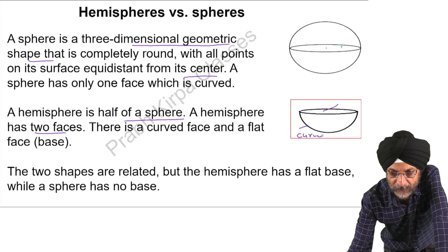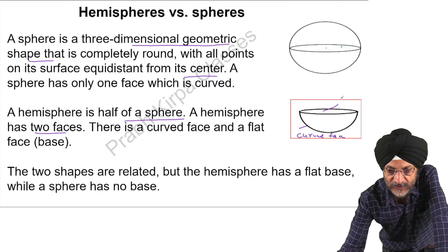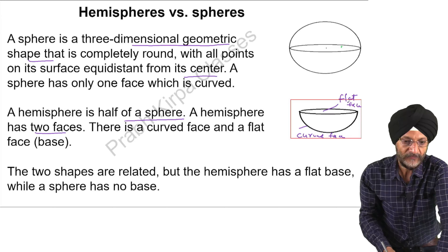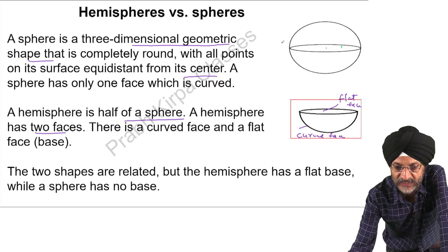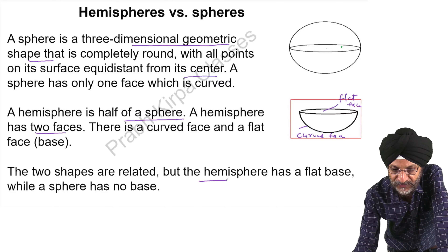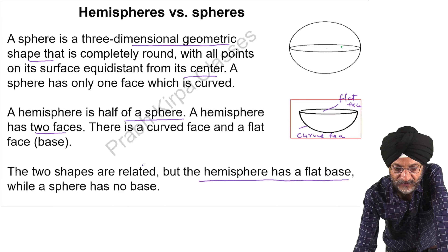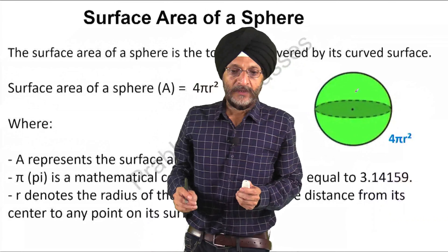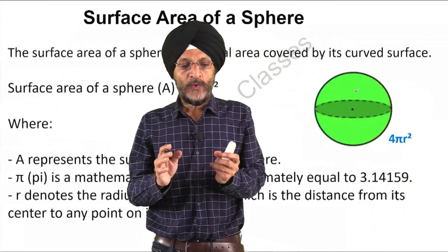Now we will understand the difference between hemisphere and sphere. A sphere is a three-dimensional geometric shape which is completely round, with all the points on the surface of the sphere at equal distance from the centre. A sphere has only one face which is curved. On the other hand, a hemisphere is half of a sphere. A sphere can be divided into two equal parts and each part is known as a hemisphere. A hemisphere has two faces.